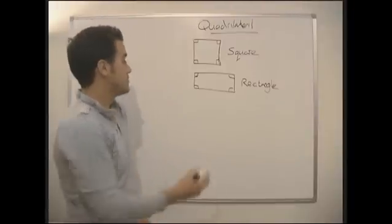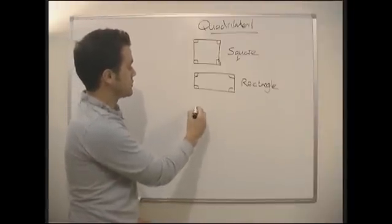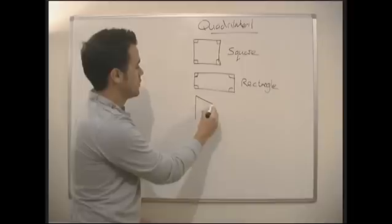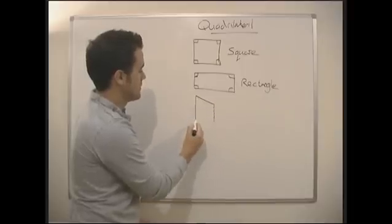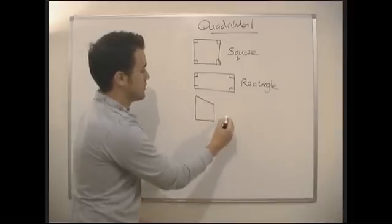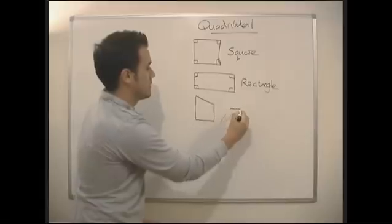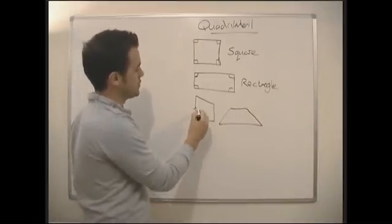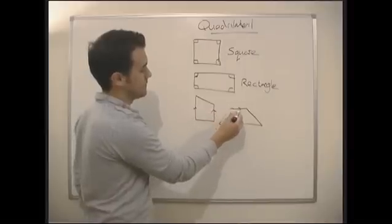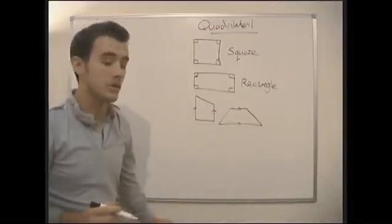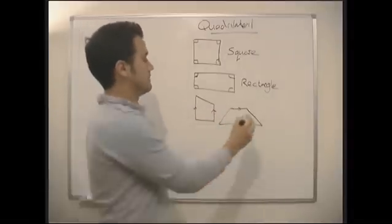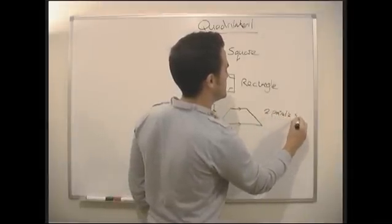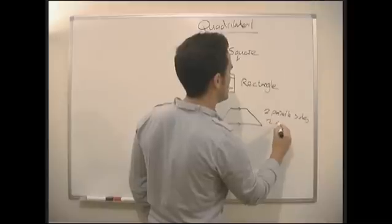More shapes with four sides. We've got a trapezium. There are two types of trapezium — one like this, and one that looks like this. The thing with a trapezium is it always has two parallel sides and two non-parallel sides.